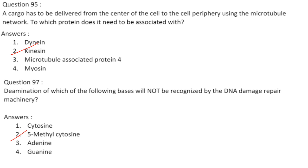A cargo to be delivered from the center of the cell to the cell periphery using the microtubule network needs to be associated with kinesin. Kinesin is a motor protein found in eukaryotic cells that moves along microtubule filaments powered by ATP hydrolysis. Kinesin walks towards the plus end of the microtubule, transporting cargo such as proteins and membrane components from the center toward the periphery — anterograde transport. Dynein moves towards the minus end in retrograde transport. Answer is option 2, kinesin.